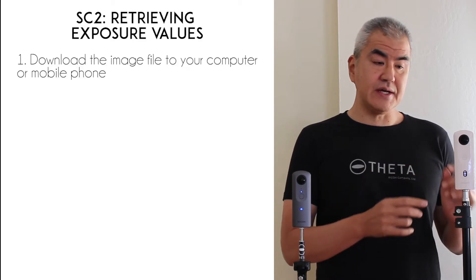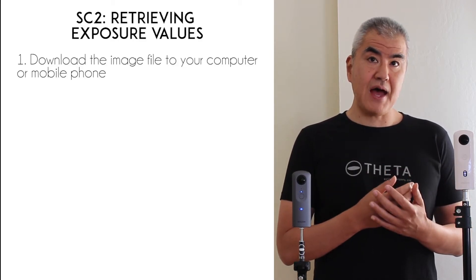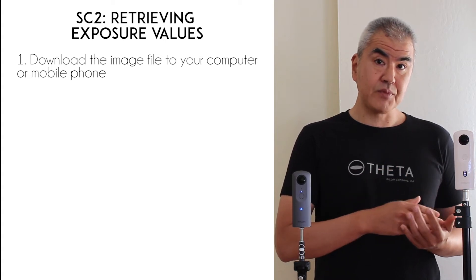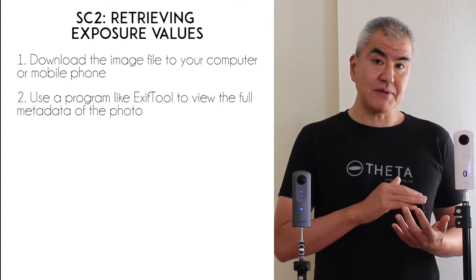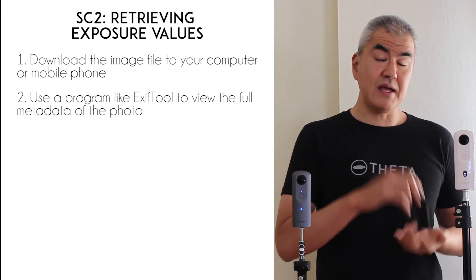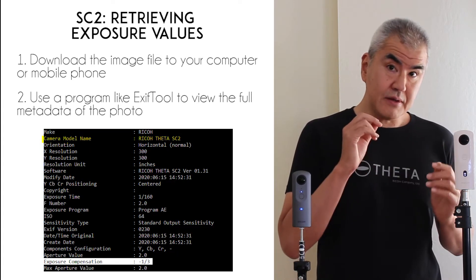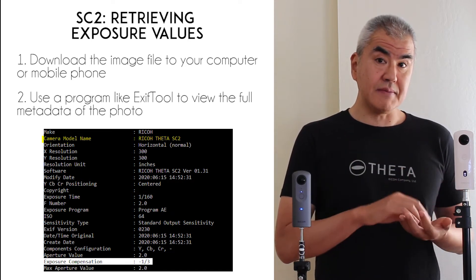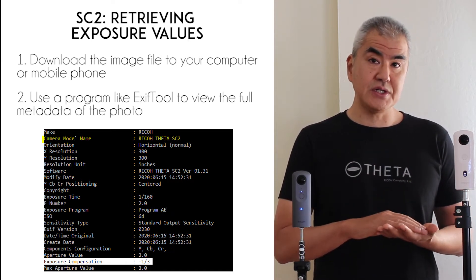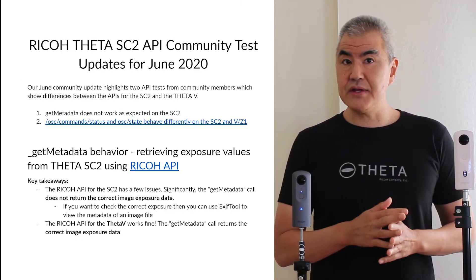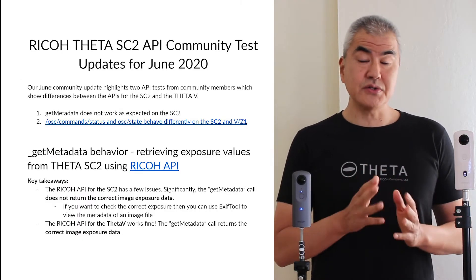There is a solution. What you need to do is, in your mobile app or desktop app, pull the image down into the mobile app. On the mobile app itself, you can then extract the metadata from the image file. The metadata values are actually correctly saved to the image, so you can see exposure compensation, GPS location, and all the other values. We have a document on this, so you can also check that out.